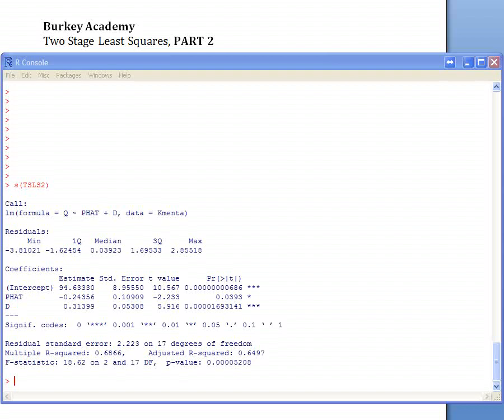In the first stage you regress the endogenous explanatory variable price, in this case, on the exogenous variables, and then use the predicted values in the original demand equation that we were estimating.